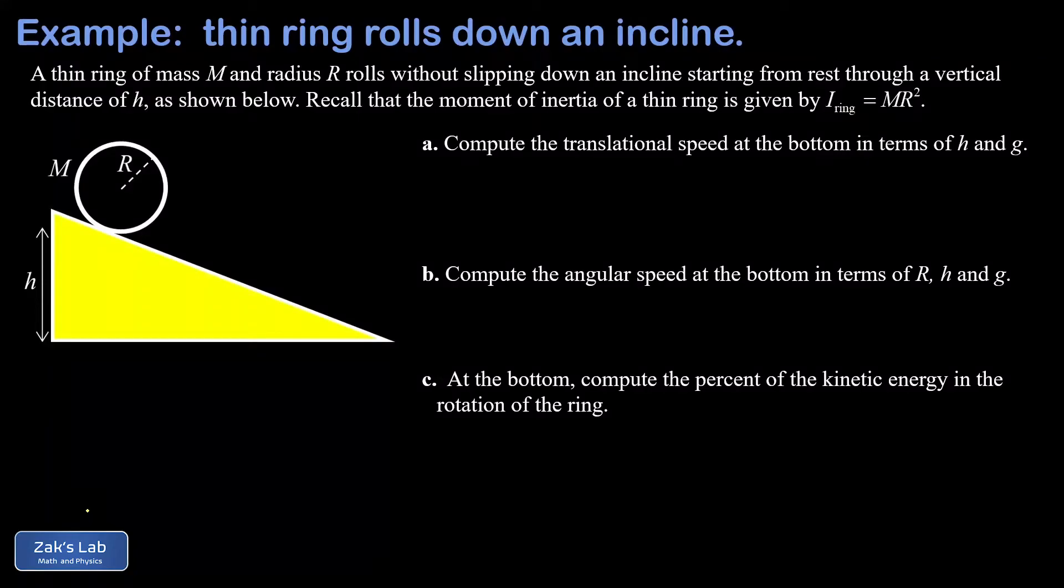In this video we're taking a very general look at a thin ring rolling down an incline through a height of h. The ring has a mass of m and a radius of r, and we're reminded that the moment of inertia of a thin ring is given by mr squared. And of course this ring is rolling without slipping.